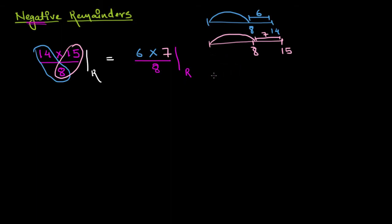My remainder will be 42 divided by 8. Let's find the remainder now. 8 times 5 is 40; I still need 2 to reach 42. So the remainder will be 2 in this case.